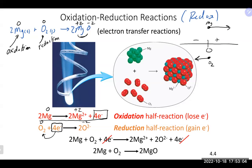These half reactions are often written separately. In simple redox reactions, you add the half reactions back together. Anything on opposite sides of the arrow can cancel out — think of the arrow like an equals sign. Before adding them together, you must make sure the number of electrons in each half reaction is the same, because however many electrons one species loses must equal how many another gains.